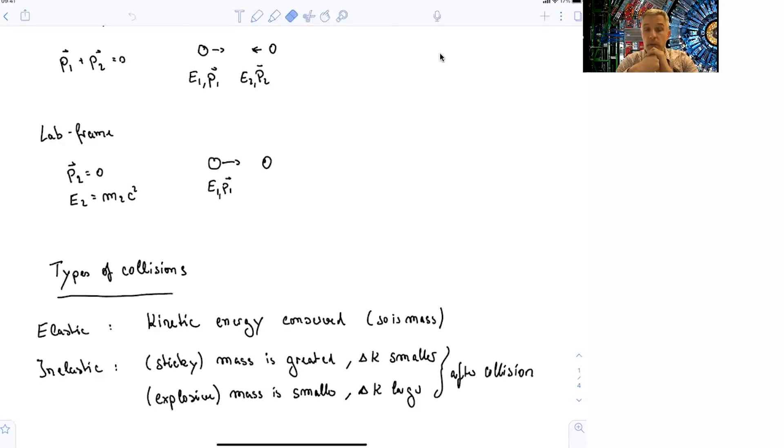And the kinetic energy after the collision is smaller. Or you can have explosive collisions, where the mass afterward is smaller. Maybe you start from one heavy, big object, and then it explodes into many smaller ones. But the kinetic energy after the collisions is smaller. Those are also collisions.